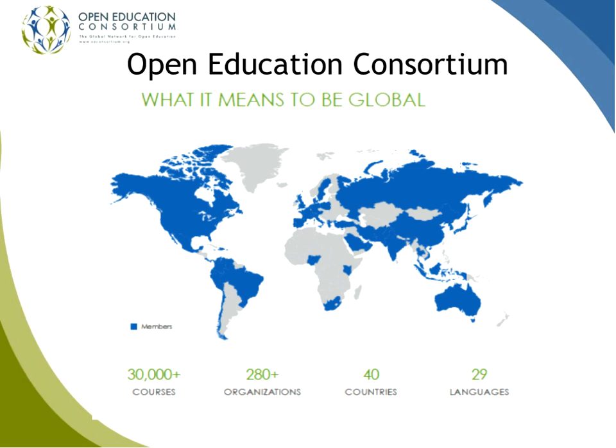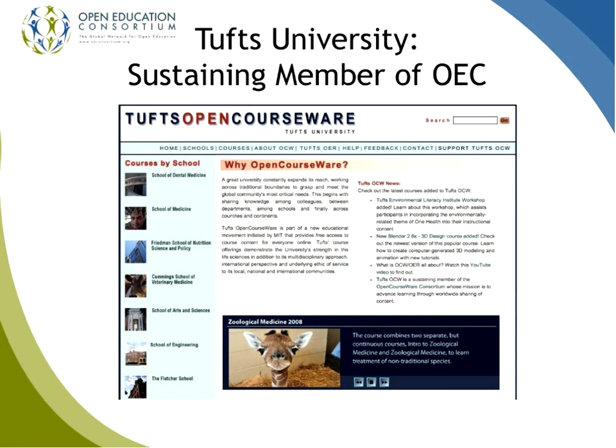The Open Education Consortium is the largest global organization dedicated to open education and spreading knowledge globally. We started out way back over a decade ago with MIT, who put their coursework online. Since that time we've grown to be in over 40 countries and 280-plus organizations and institutions worldwide. Over 30,000 courses have been posted online and they've been translated into 29 languages. This is a movement that started over a decade ago and has just been picking up momentum. You're going to hear about one of their exciting MOOCs in a moment.